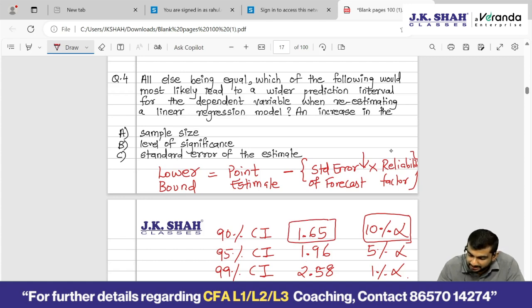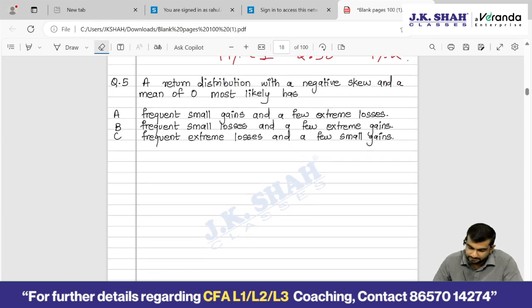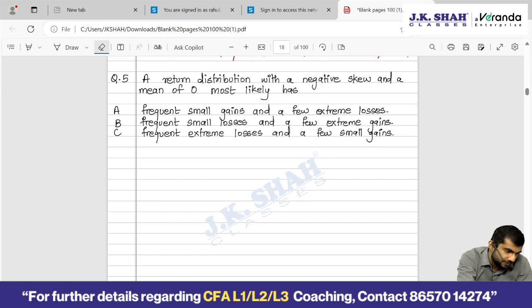So what should be the answer? Option C: Standard error of estimate. If the standard error of estimate is high, the prediction interval will be wider. Clear? Fine. Proceed.